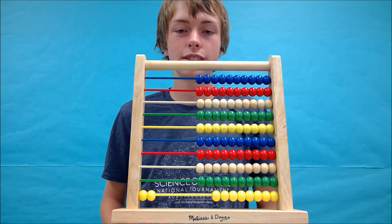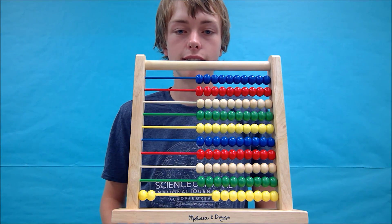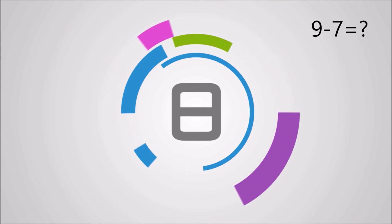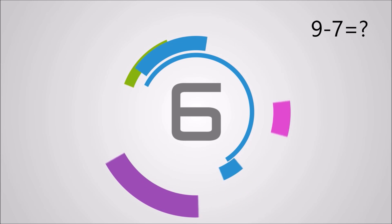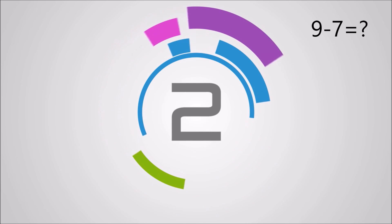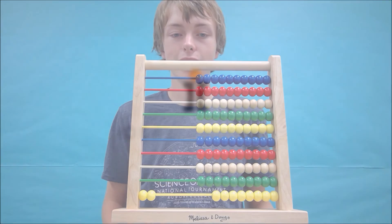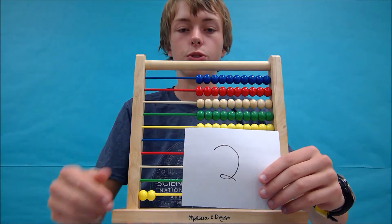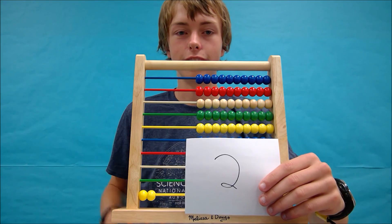Let's try one more example. Let's try 9 minus 7. The answer to this one is also 2, and this is what your abacus should again look like.